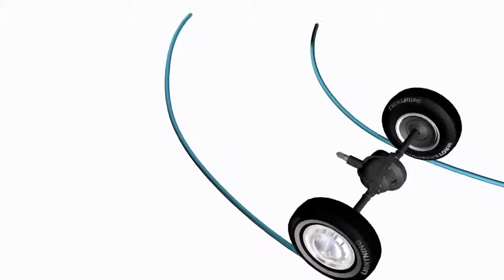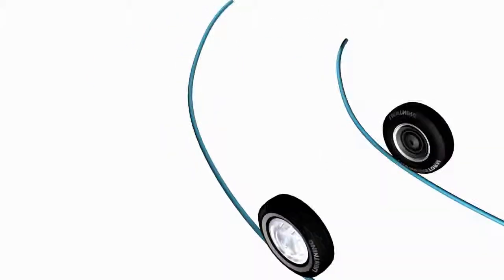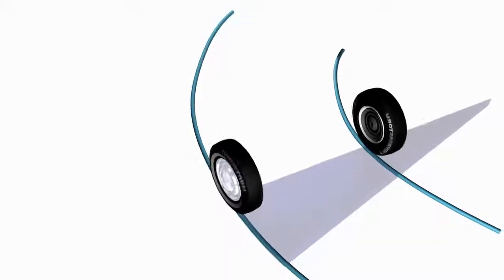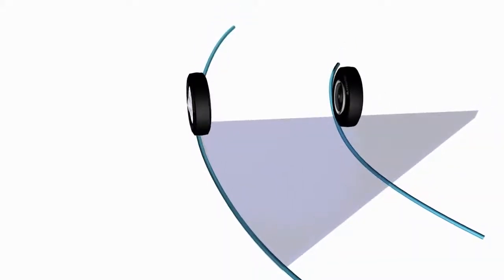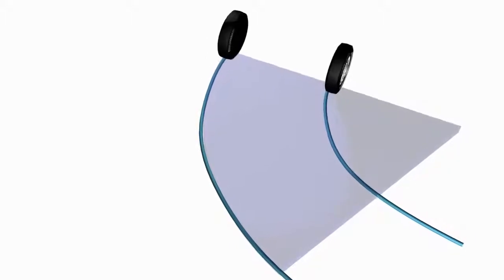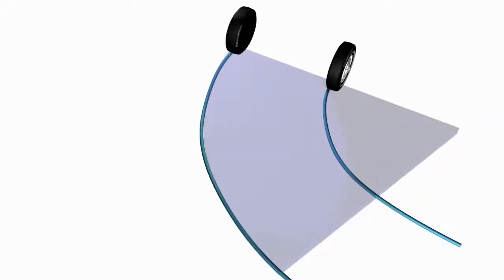Consider these wheels which are negotiating a turn. It is clear that the left wheel has to travel more distance compared to the right wheel. This means the left wheel has to rotate at a higher speed.